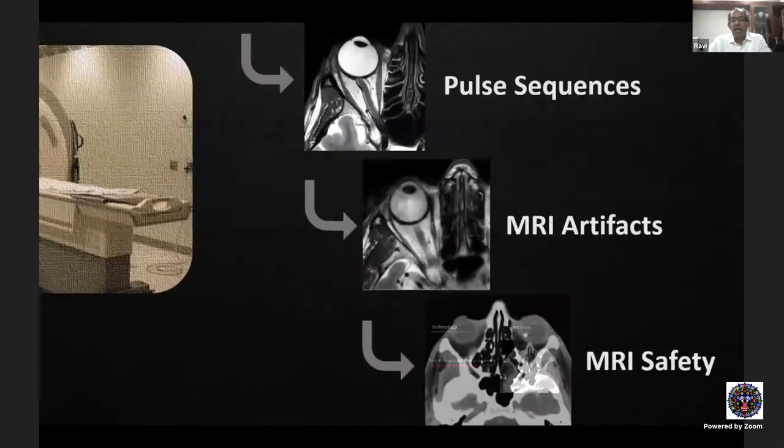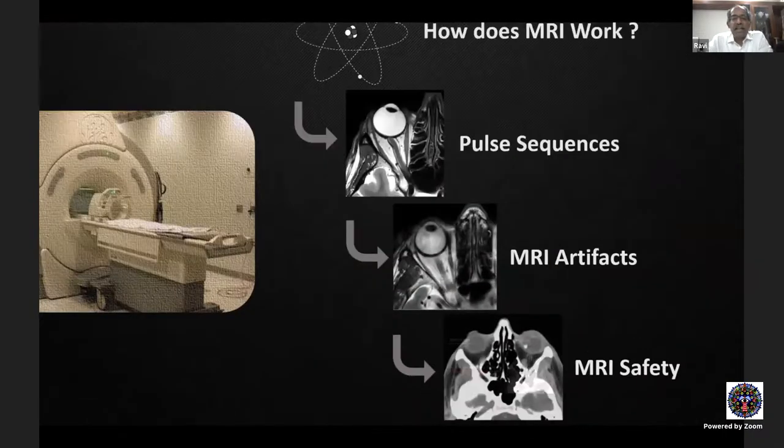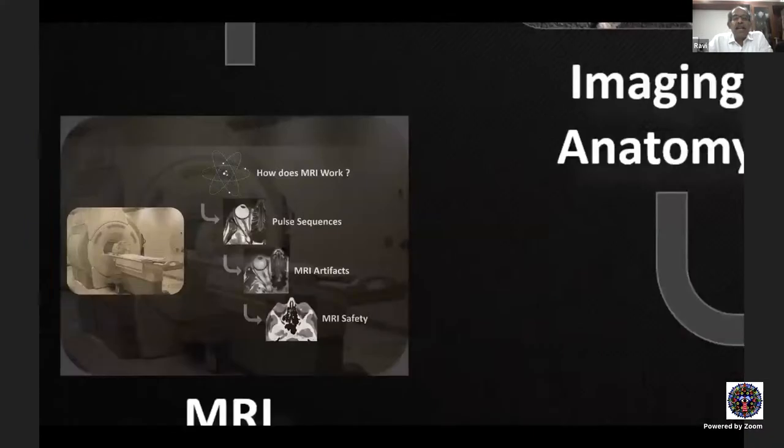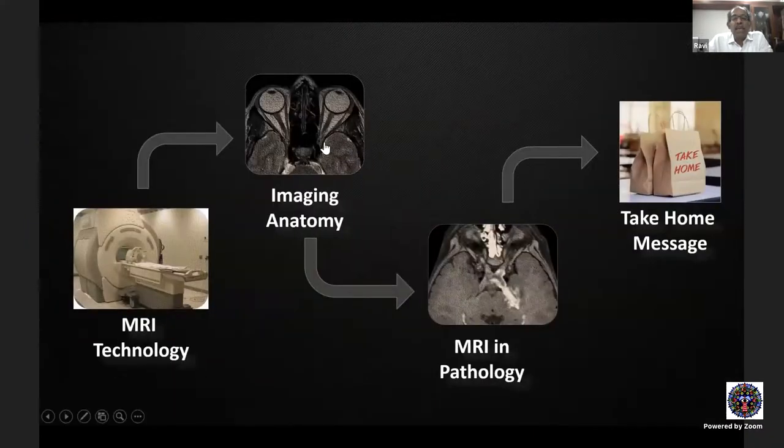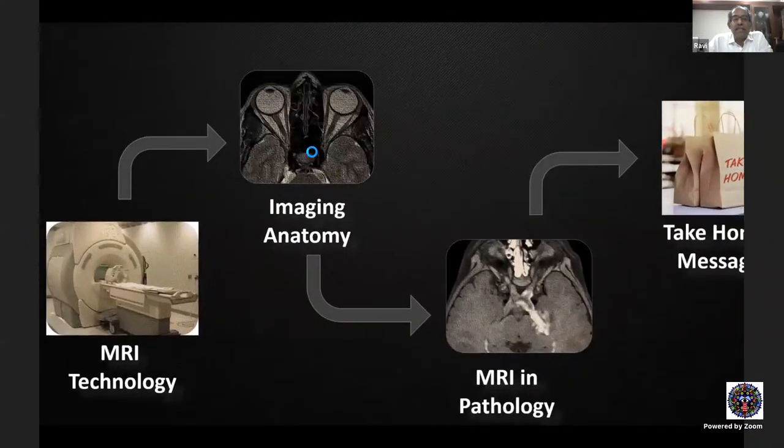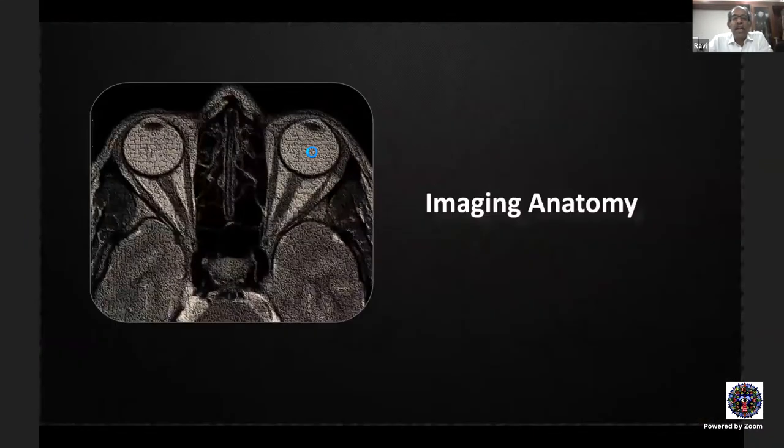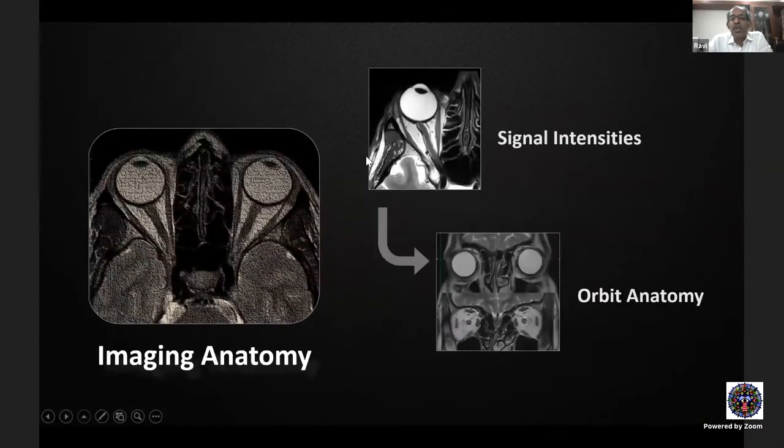The most important absolute contraindication for MRI in ophthalmology is a metallic intraocular foreign body. Unlike a foreign body embedded in soft tissue supported by surrounding structures, an IOFB in the globe is free to move and can cause severe ocular damage in the MRI environment. Any patient with suspected penetrating injury with a metallic fragment is a candidate for CT, never MRI.